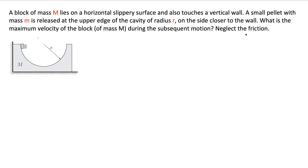So let's read out the problem first. There is a block of mass M which lies on a horizontal slippery surface — everything is frictionless — and also touches a vertical wall. A small pellet of mass m is released at the upper edge of a cavity of radius R inside the block of mass M. The pellet is released from this position. What is the maximum velocity of the block of mass M during the subsequent motion? Neglect friction.